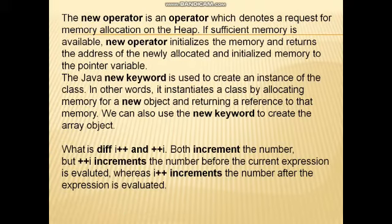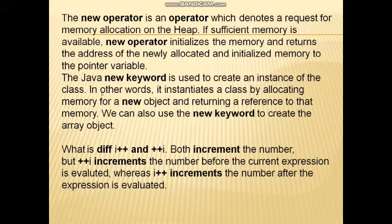The new operator denotes a request for memory allocation on the heap. If sufficient memory is available, the new operator initializes the memory and returns the address of the newly allocated memory to the pointer variable. The Java new keyword is used to create an instance of a class — it instantiates a class by allocating memory for a new object and returning a reference to that memory. We can also use the new keyword to create array objects.